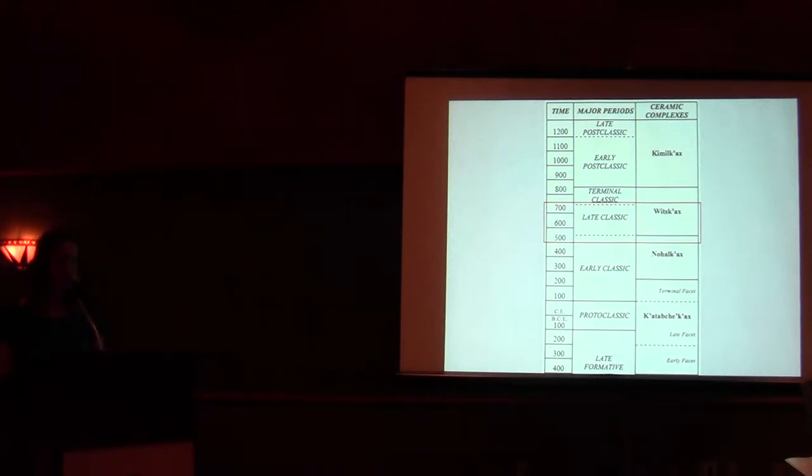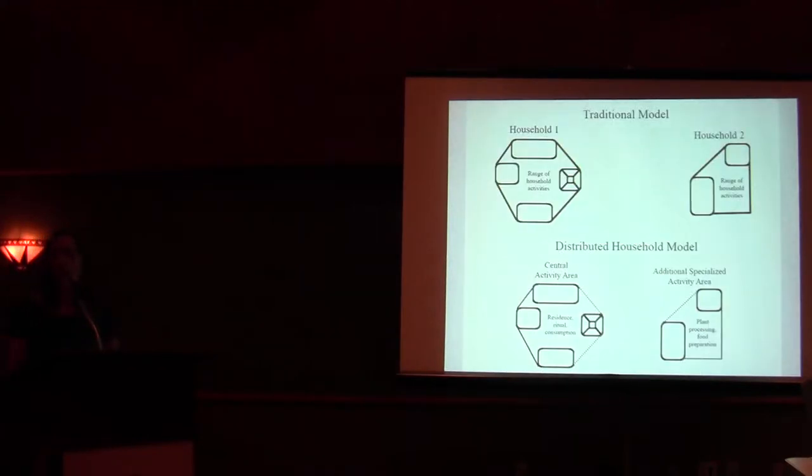We compare two structures that have been considered the remains of adjacent classic period households. Using plant, faunal, and other data, we track changes in the organization of activity areas at the larger and smaller structure through time. As a result, we suggest that by the classic period, households were distributed across more than one structure. You can see two distinct households as an interpretation of two structures versus a more integrated set of structures.